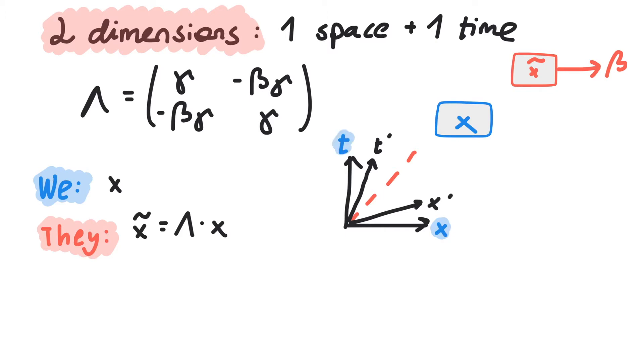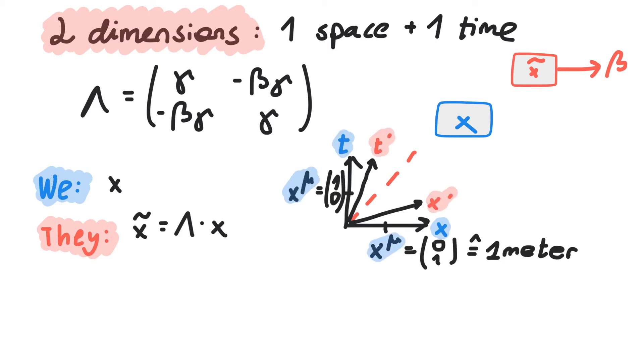So how does this observer see us? We multiply lambda with 1,0 and 0,1, two vectors that represent our coordinate axes.